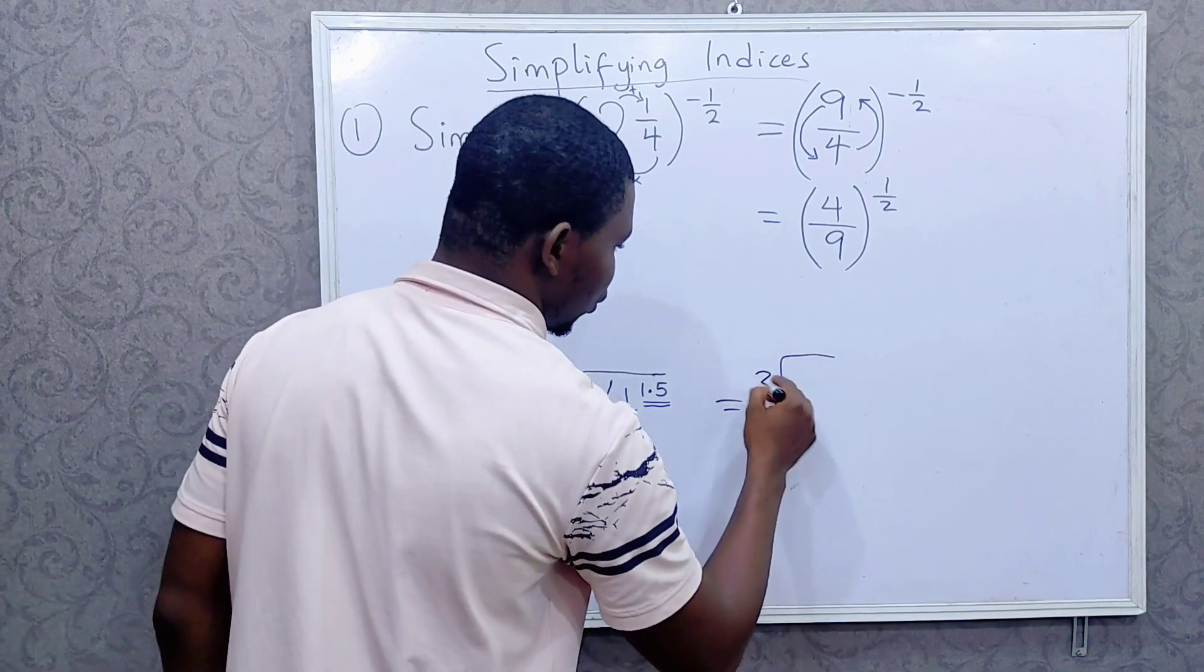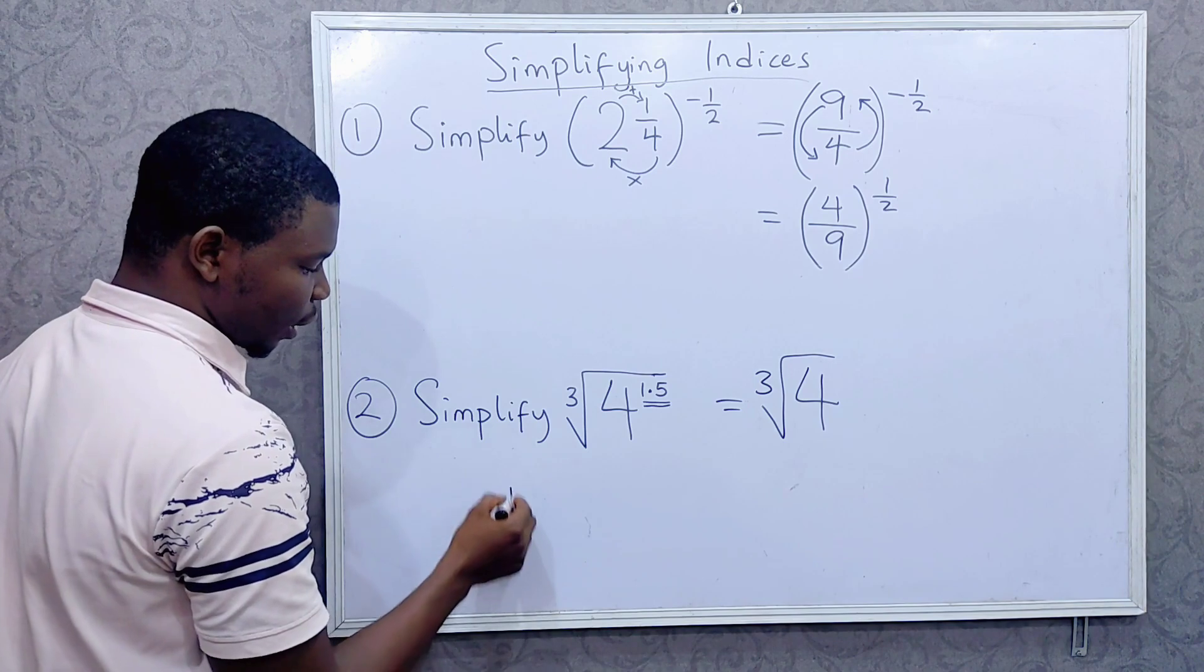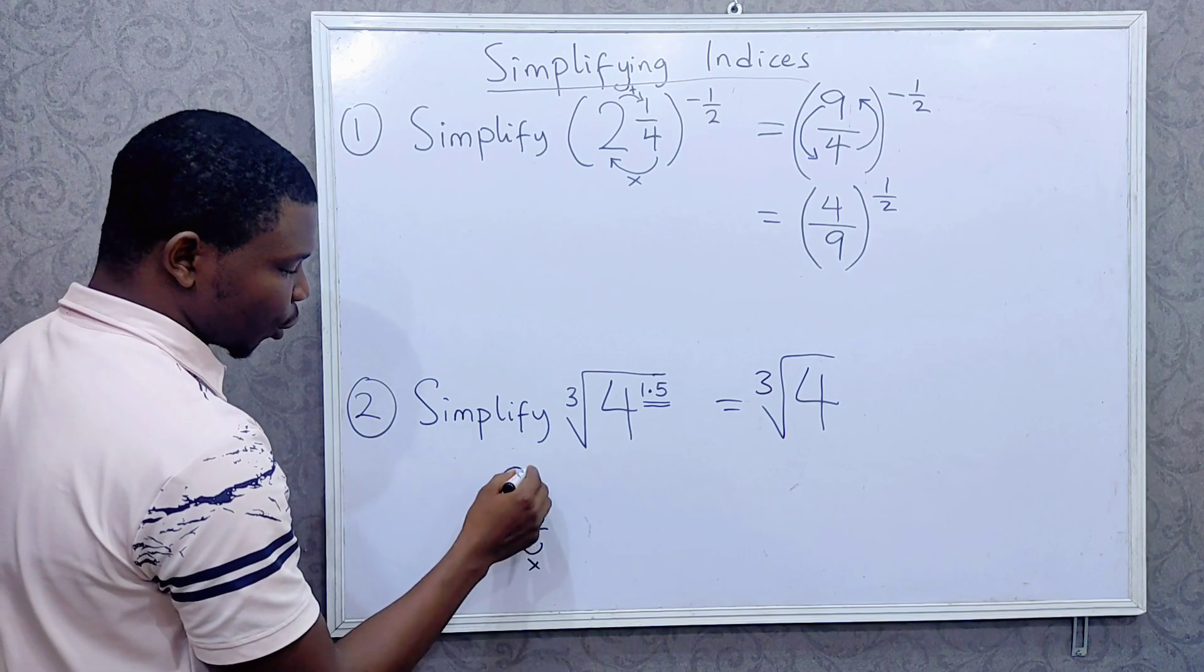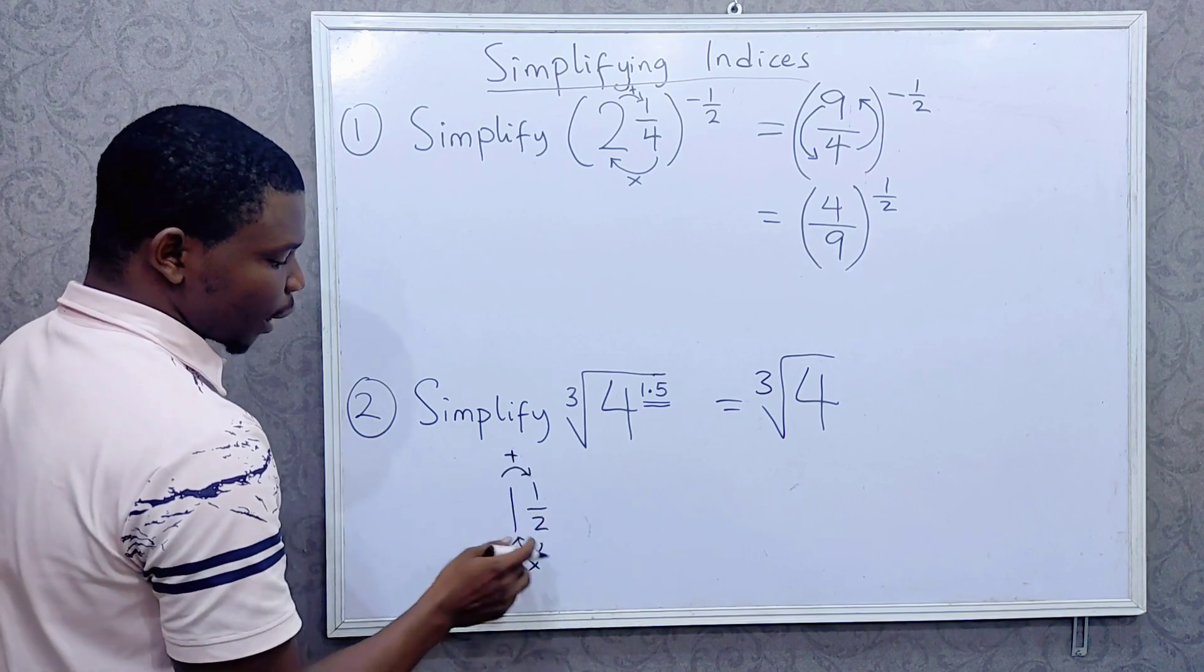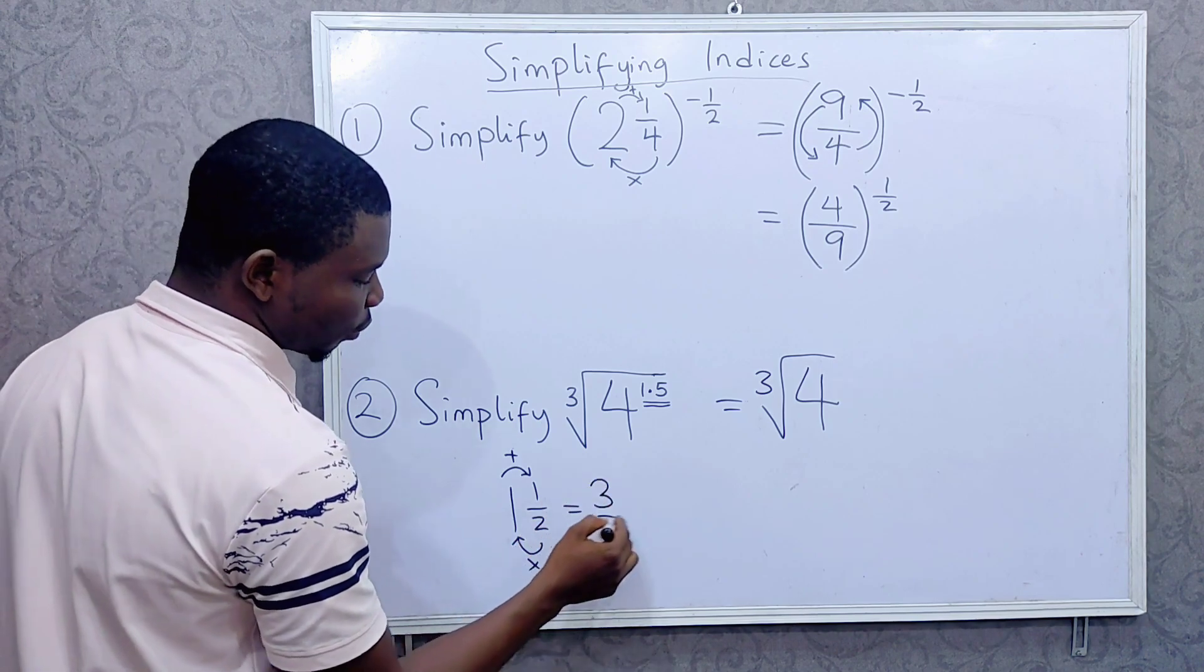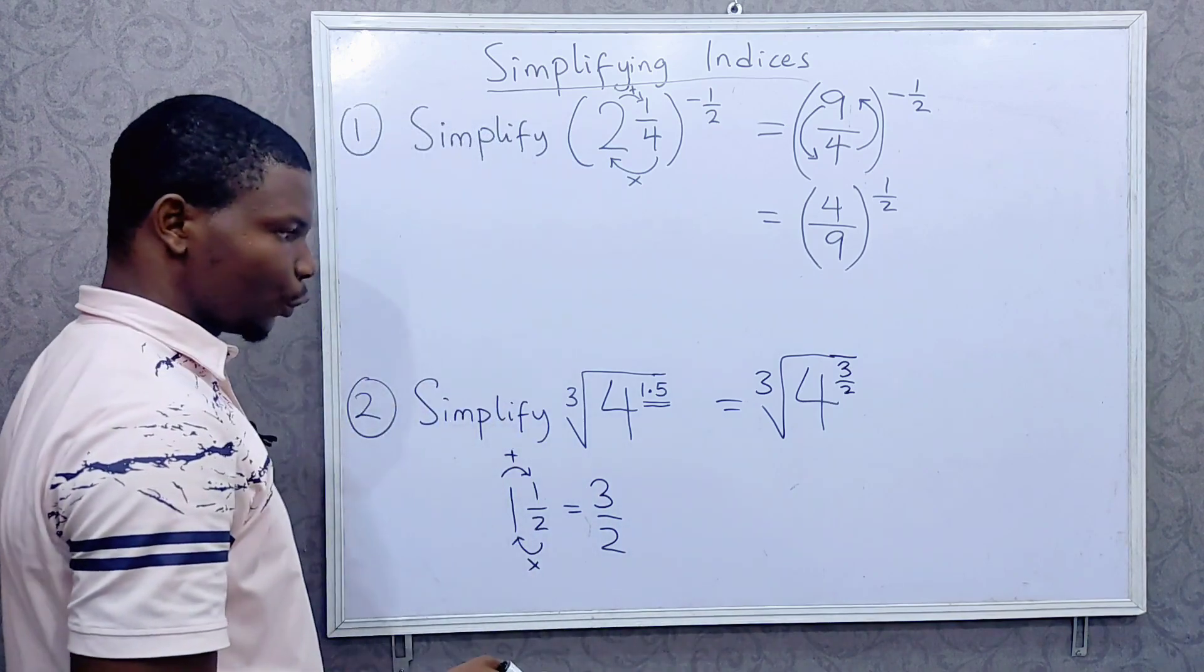So this would be cube root of 4. 1.5 is the same thing as 1.5. And changing this to an improper fraction, 2 times 1 is 2 plus 1 is 3. So this would be 3 over 2. So I can write this as 3 over 2.